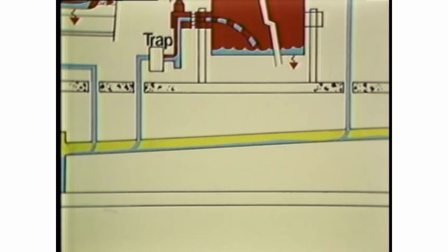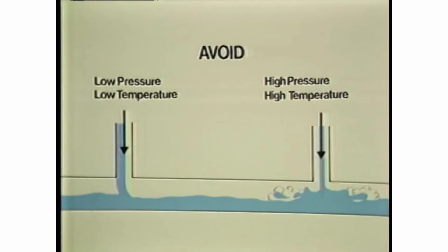Trap discharge lines must enter return lines at the top. Avoid discharging low and high pressure returns into the same return main. High pressure lines release high temperature condensate. If this condensate combines with lower temperature, low pressure trap discharges, water hammer can occur.